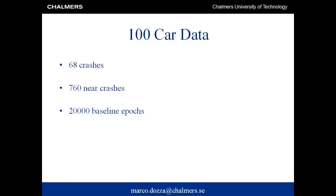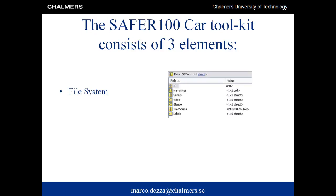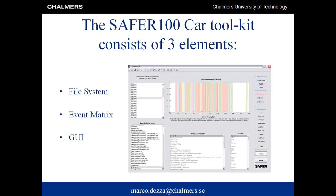The Safer 100 Car Toolkit overcomes this limitation by providing the user with a homogeneous unique dataset together with a graphical user interface to visualize and analyze individual events. The toolkit consists of three elements: a file system with 828 files — 760 for near crashes and 68 for crashes — each containing multiple source information organized and homogenized on a trip-by-trip basis in MATLAB format; an event matrix containing all data for the 868 events and 20,000 epochs of baseline organized according to a common structure with all data except time series; and a graphical user interface to visualize and analyze data from the file system.